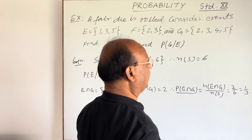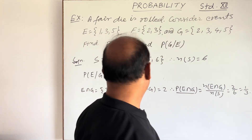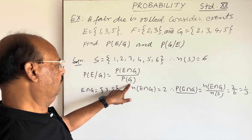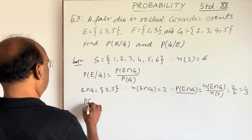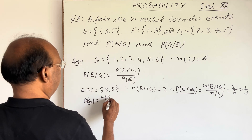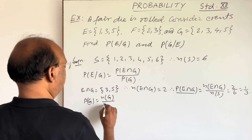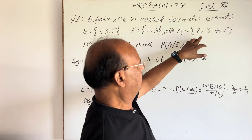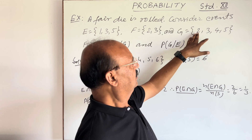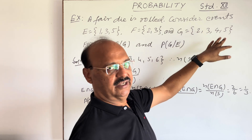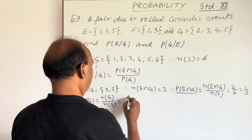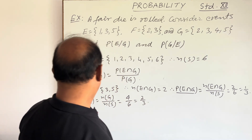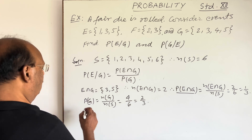This is the probability of E intersection G. Now we have to find the denominator — probability of G. Probability of G equals the number of elements in event G divided by N(S). G has elements 2, 3, 4, 5, so there are 4 elements. Therefore probability of G = 4/6 = 2/3.